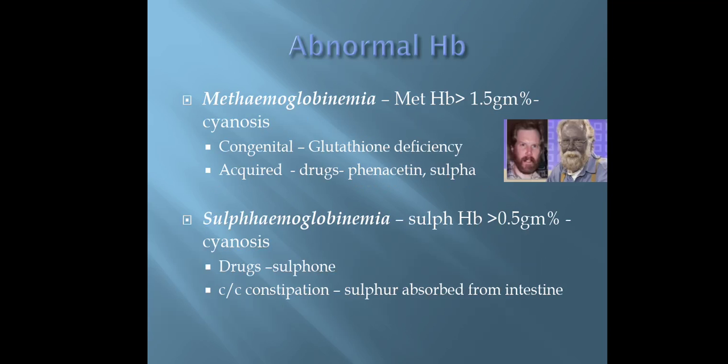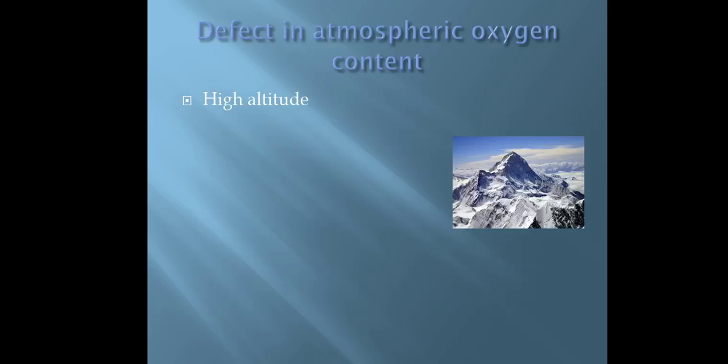Next, sulfhemoglobinemia: cyanosis occurs when sulfhemoglobin is more than 0.5 gram percentage. It can be due to drugs like sulfone. Chronic constipation can also cause sulfhemoglobinemia by absorption of sulfur from the intestine. The next defect is in atmospheric oxygen content, as seen at high altitude.